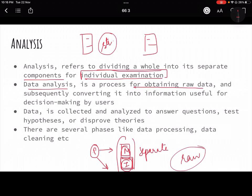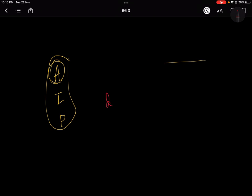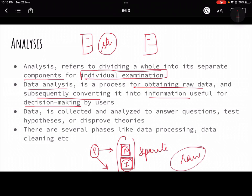Data analysis is a process for obtaining the raw data and subsequently converting it into information useful for making decisions. The keywords are: you have converted the data into information. Data is just raw. It becomes information when you can take certain analysis of it. That means you can draw some conclusion from it. Data is collected and analyzed to answer questions, test hypotheses, and disprove theories.